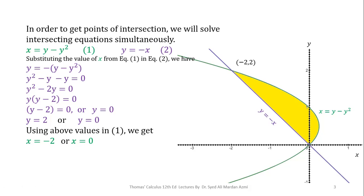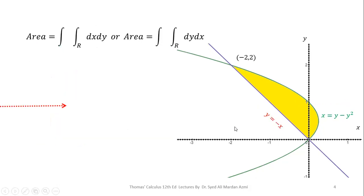So, after this, we have calculated the points of intersection and we know the equation of all the boundaries. So, in the next step, we can evaluate the area.